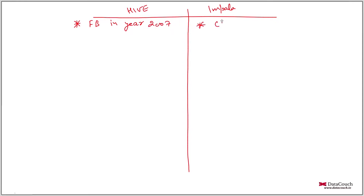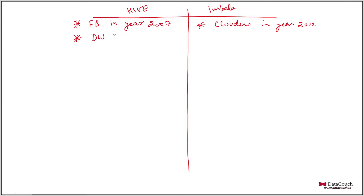Impala was created at Cloudera in 2012 — approximately during that time frame it was announced. Hive was created as a data warehousing solution on Hadoop.